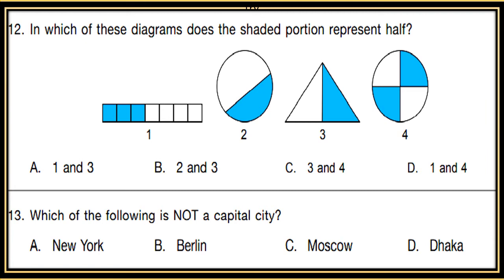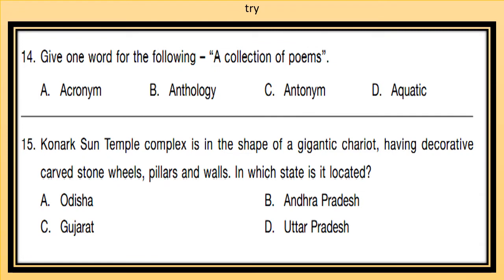Question 13: Which of the following is NOT a capital city? Options are New York, Berlin, Moscow, or Dhaka. Question 14: Give one word for 'a collection of points.' Options are: acronym, anthology, antonym, or aquatic. Be prepared for one-word substitution questions.